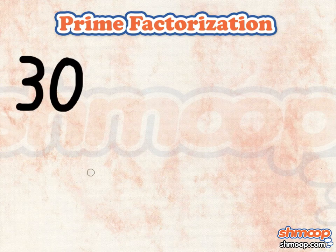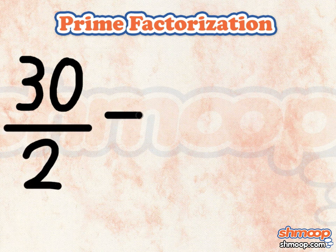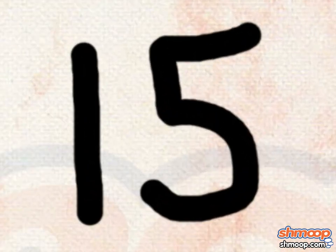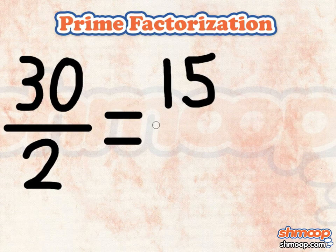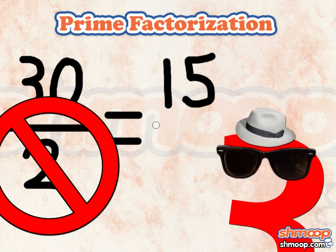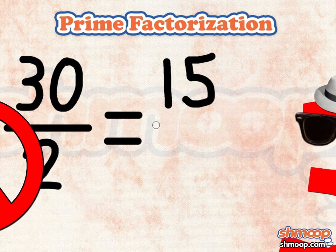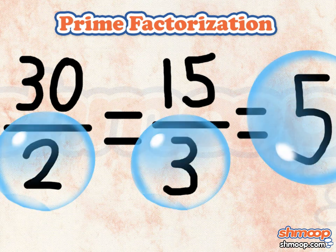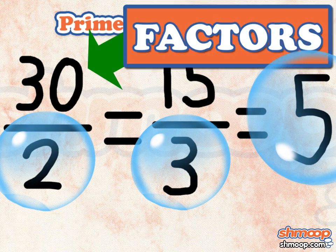Say you have the number 30. Any time you start with an even number, the first thing you can do is divide by two. In this case, our result 15 can also be simplified. It isn't divisible by our first prime number, but it is divisible by the next one on our list. And suddenly we're left with three prime numbers. Here we can say that two, three, and five are factors of 30, because each of them can be divided into the number evenly.